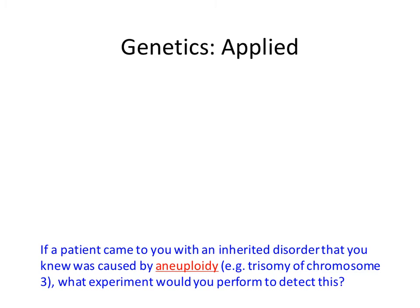You know somebody with a medical condition associated with aneuploidy — the wrong number of chromosomes. What experiment would you do to detect whether someone is aneuploid, say trisomic — having three copies instead of two for chromosome 3? We could karyotype. What's the difference between a karyotype and a karyogram? We've been talking about karyograms — photographs of chromosomes arranged into a nice organized picture. What's a karyotype? It's a written description of a karyogram, not pictures or shapes of chromosomes.